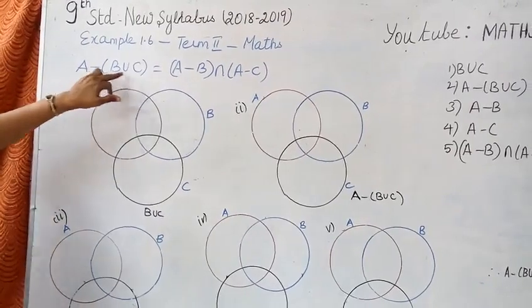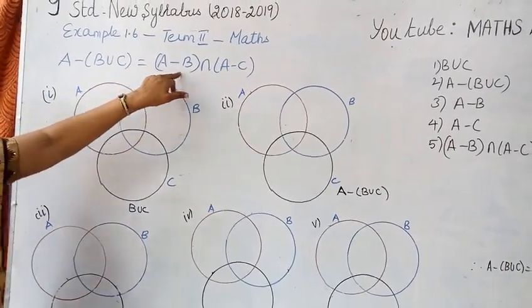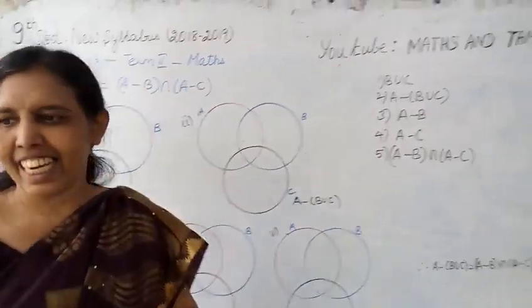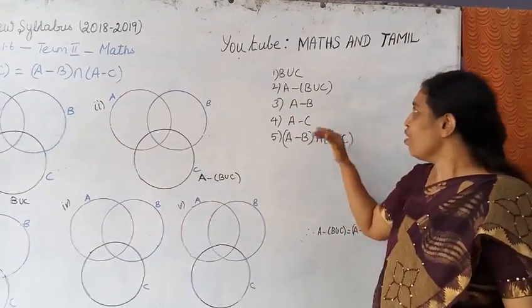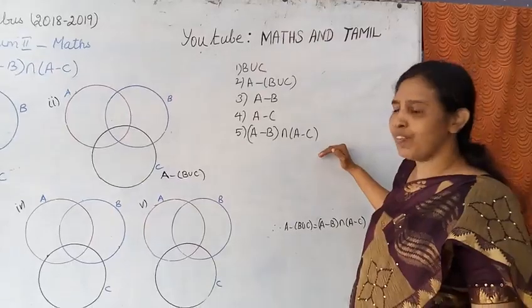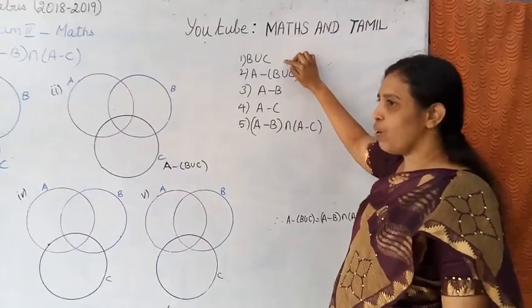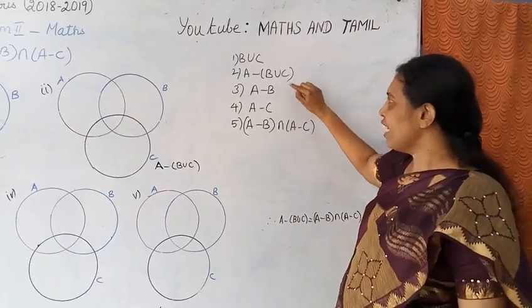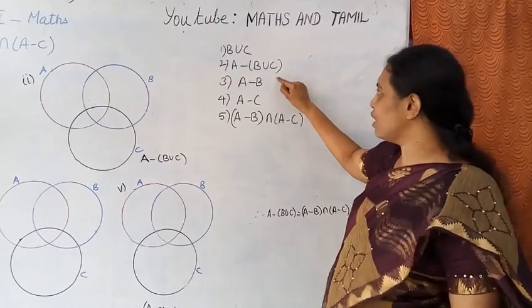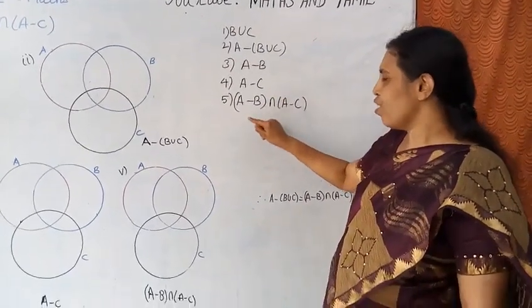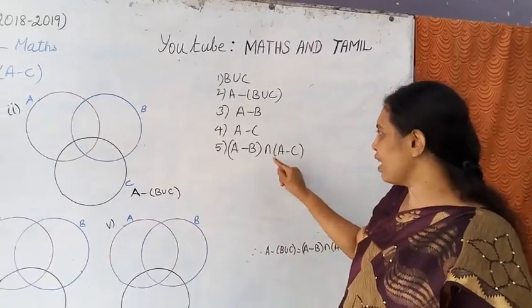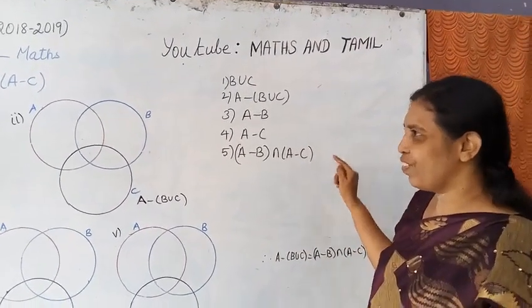A difference B union C equal to A difference B intersection A difference C. By proving this by Venn diagram, we have to draw 5 Venn diagrams. First one is B union C, second A difference B union C, third A difference B, fourth A difference C, fifth is A difference B intersection A difference C.